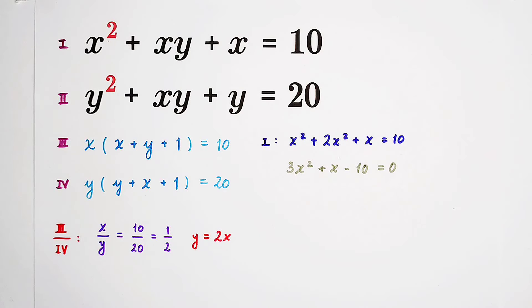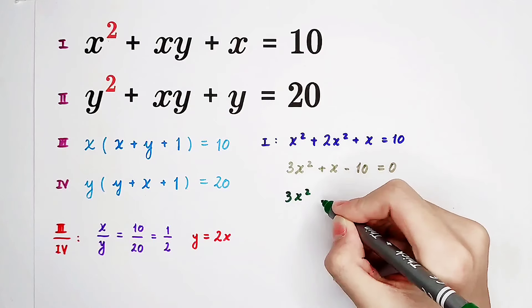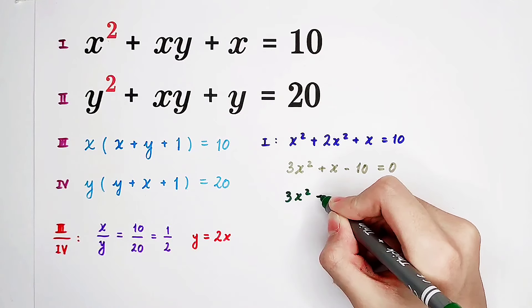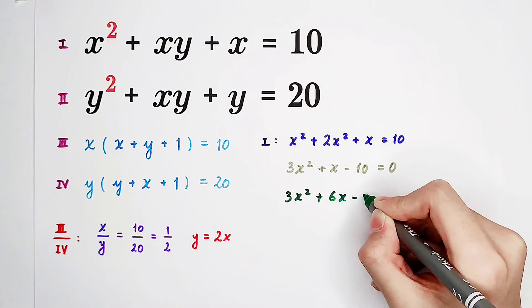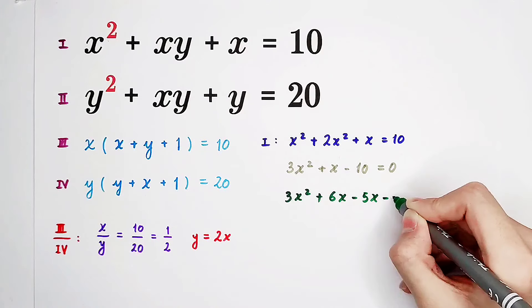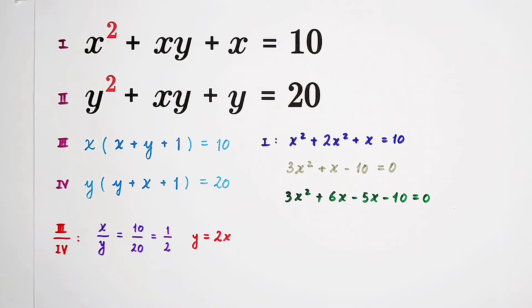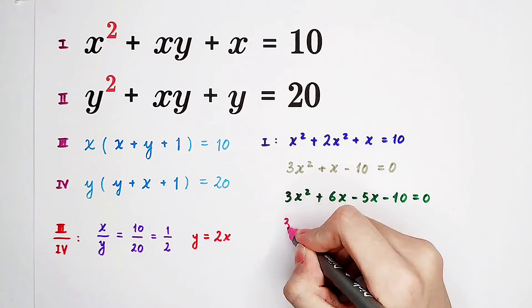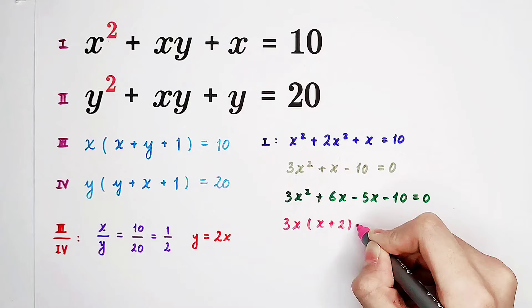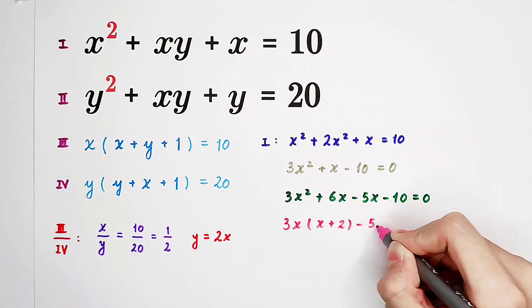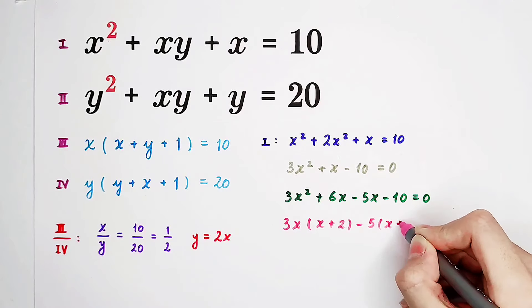We can factor the left side. How? This plus x can be written as plus 6x minus 5x, because then we can get the factor x plus 2. Here we can take out 3x, giving x plus 2.